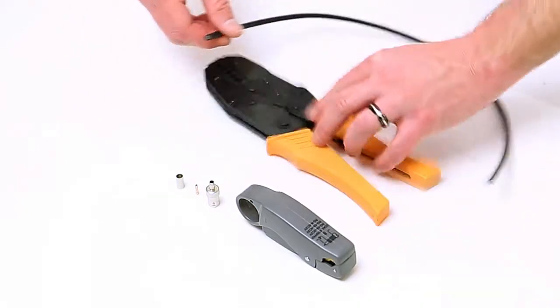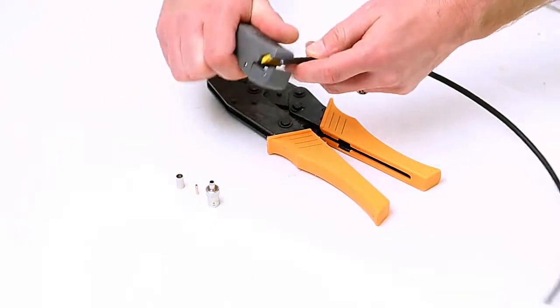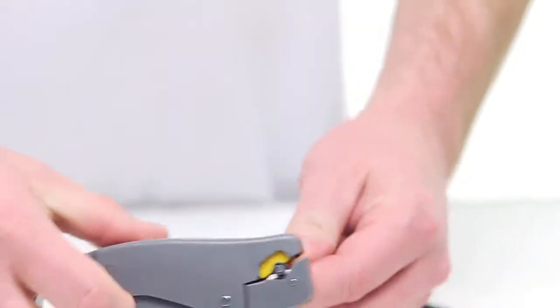To begin, take your coax stripper and remove the outer jacket and dielectric of the cable. Rotate the tool a few times around the outside of the cable and peel the jacket off.